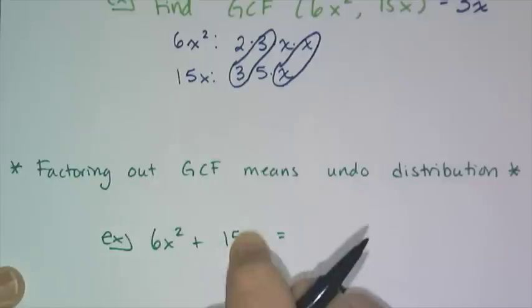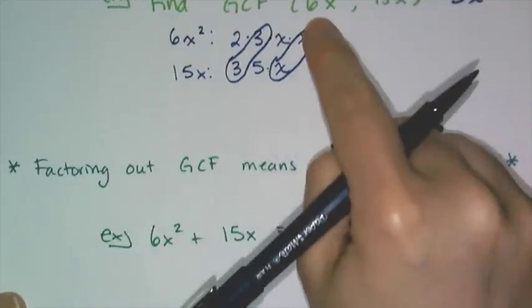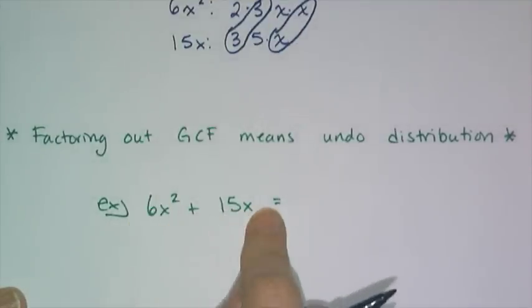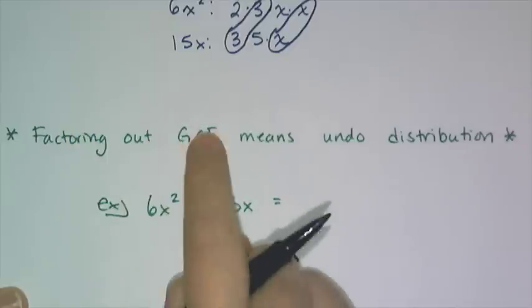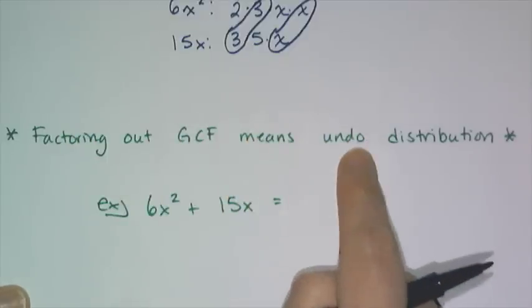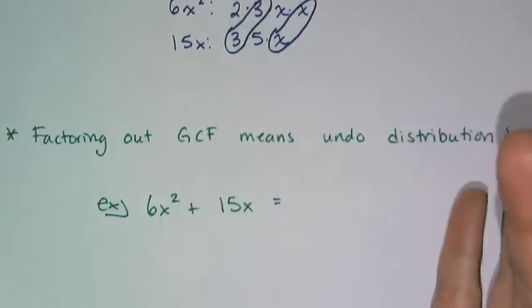In order to factor out the GCF, you have to find it first. So what I did was I transformed these two monomials into a polynomial, 6x² + 15x. So when I ask you to factor out the GCF, that means I want you to undo the distribution you learned in the second six weeks. And the first step is to of course find the GCF.